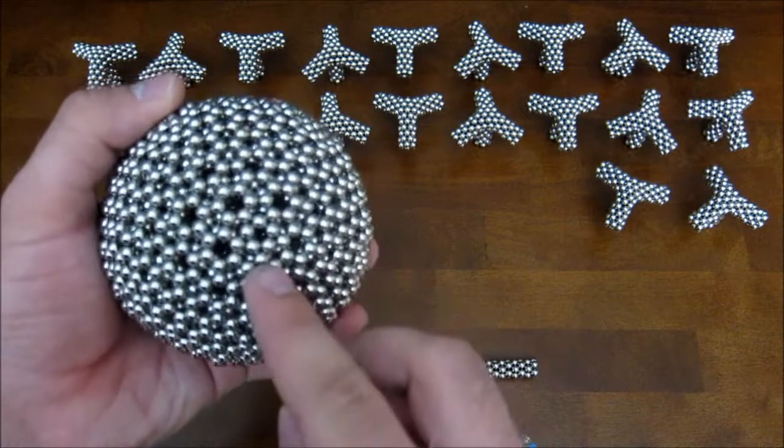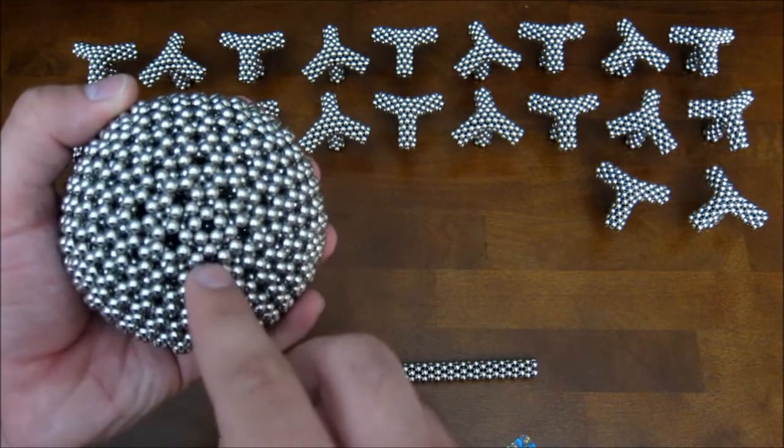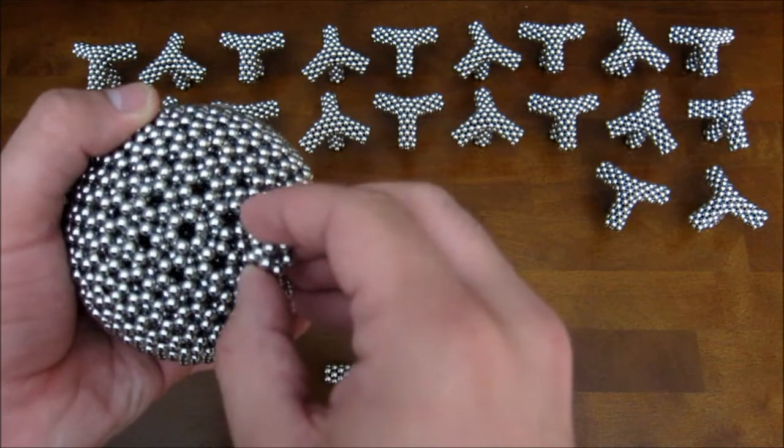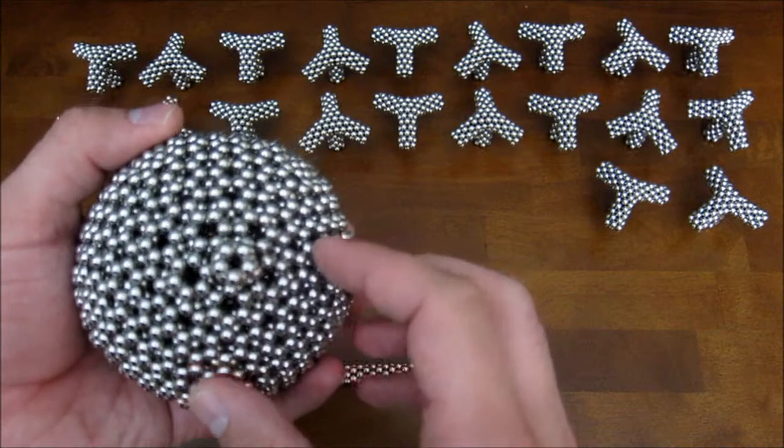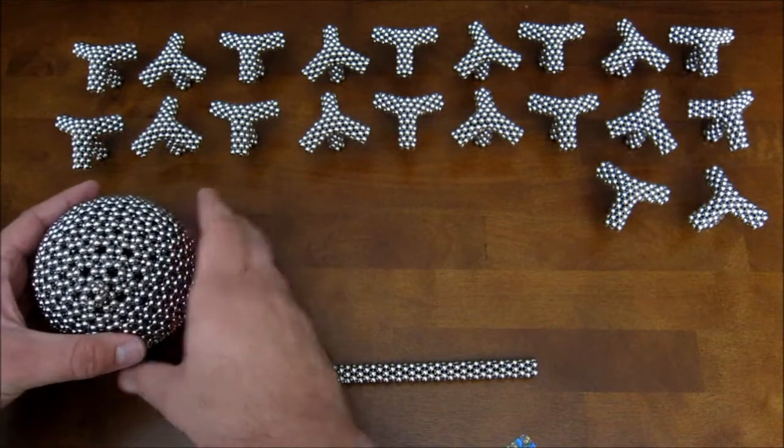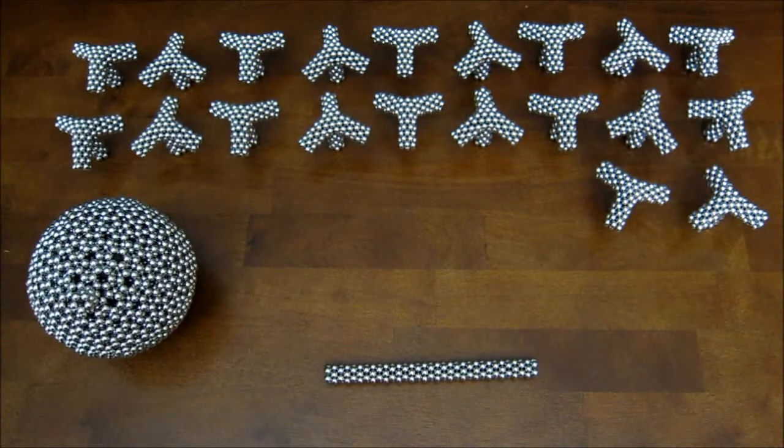And for each stack of three rings, you're going to place it down on one of the pentagons that are arranged across the surface of the sphere. Just like that. And there are 12 pentagons on the surface of the sphere. So you need to cut up 12 stacks of three and add them all across the sphere.